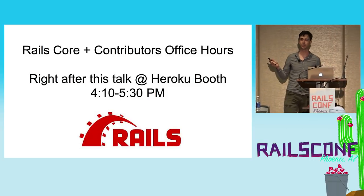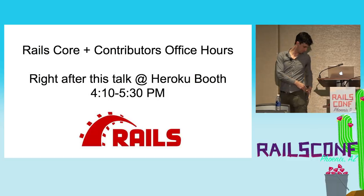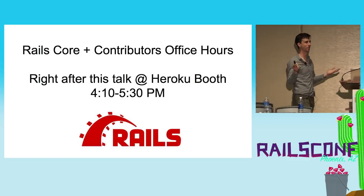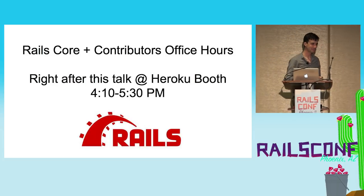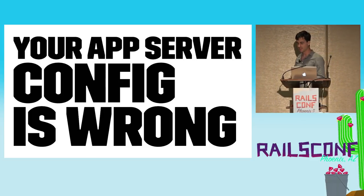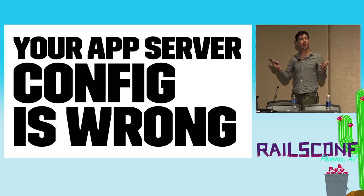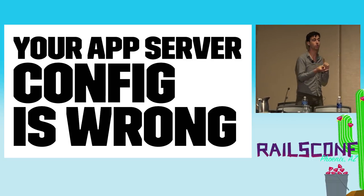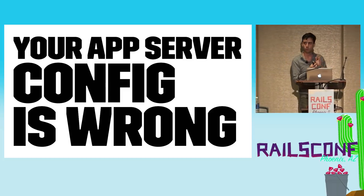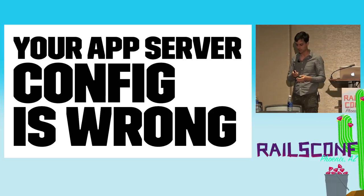This is Heroku's sponsored talk. I do not work for Heroku — I'm not a Heroku employee — but they were nice enough to give me this slot. This talk is called "Your App Server Config is Wrong." When I talk about application servers, I mean things like Puma, Passenger, Unicorn, Thin, and Webrick — all the things that start and run our Ruby applications.